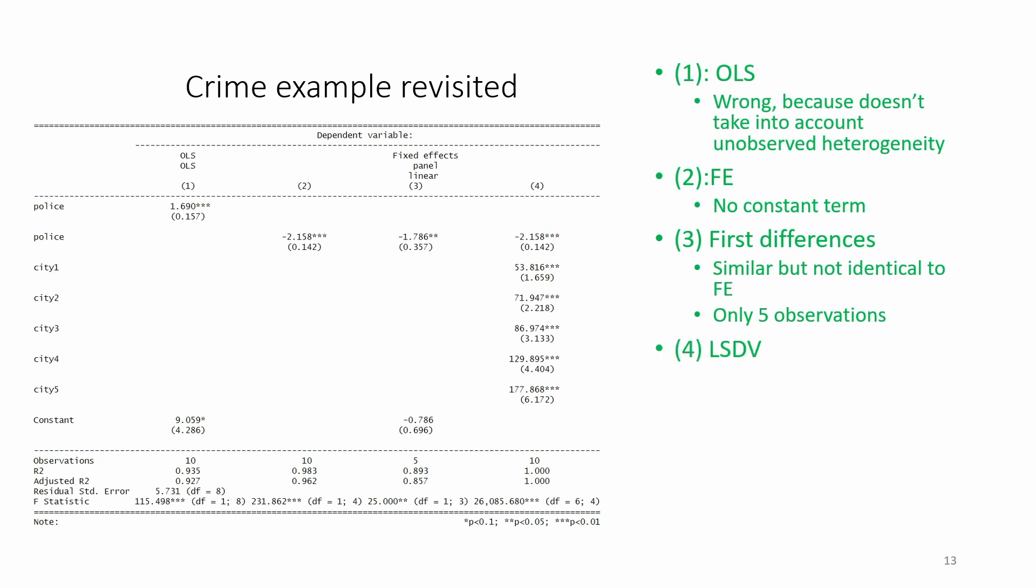Model 4 refers to LSDV, least squares dummy variable regression. What LSDV does is it adds one dummy variable for each city, which is equivalent to the demeaning that is done for fixed effects regression. We have 5 dummy variables, one for each city.